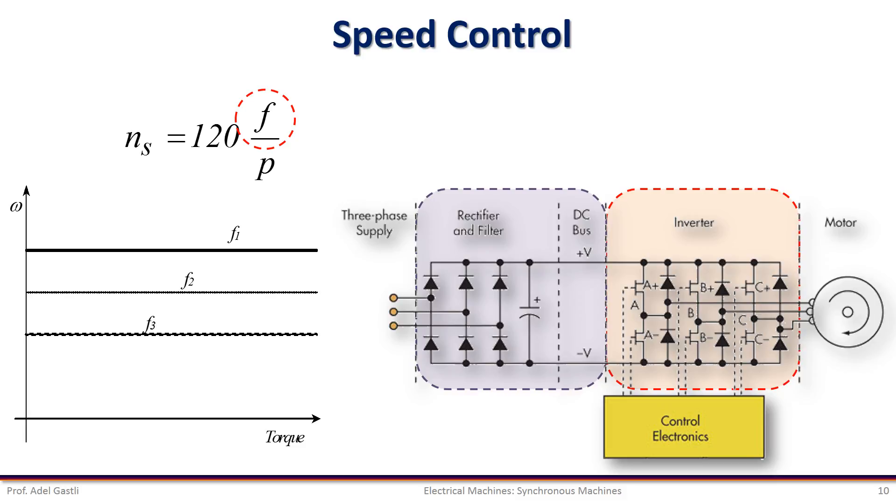In summary, we can say that, in order to control the speed of a synchronous machine, we need to control the frequency of its power supply, and to control the power and torque, we need to control the excitation current.